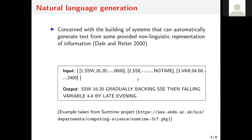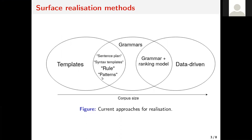Natural language generation is an area that lies at the intersection of AI and computational linguistics. It's particularly interested in the generation of texts from some non-linguistic representations of information. An example of an input-output pair would look something like this. Of particular interest to us is something called surface realization within NLG — a task where you are interested in mapping whatever internal representations you have of your system into text.